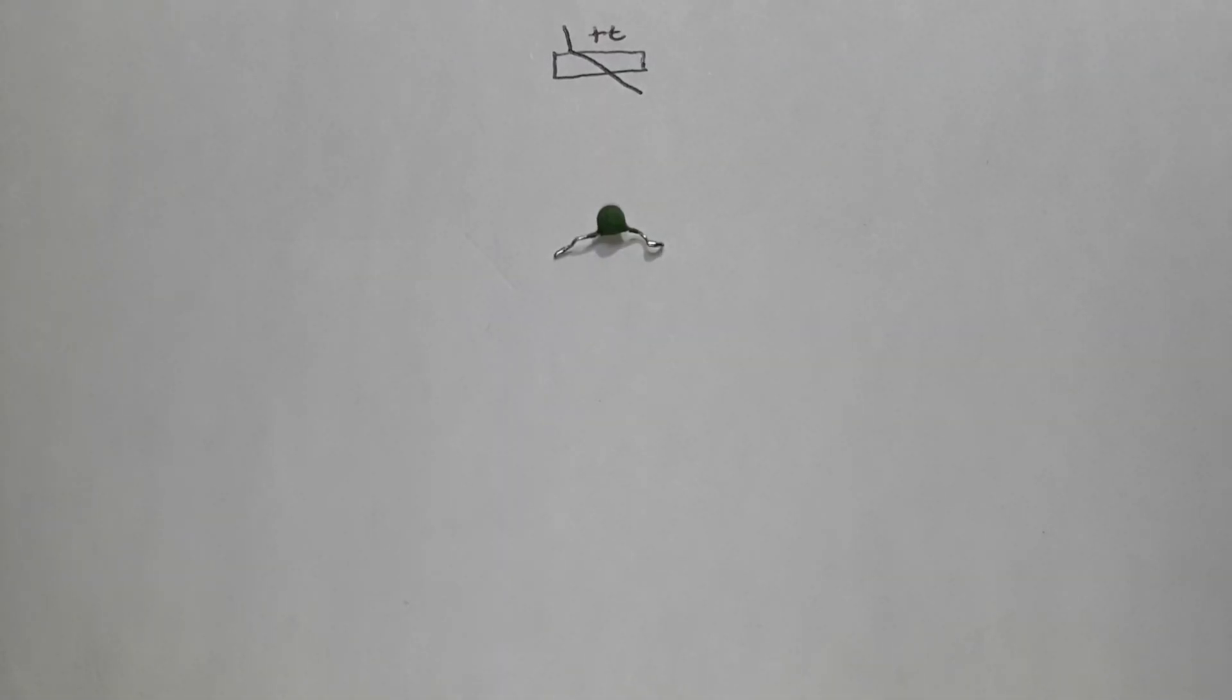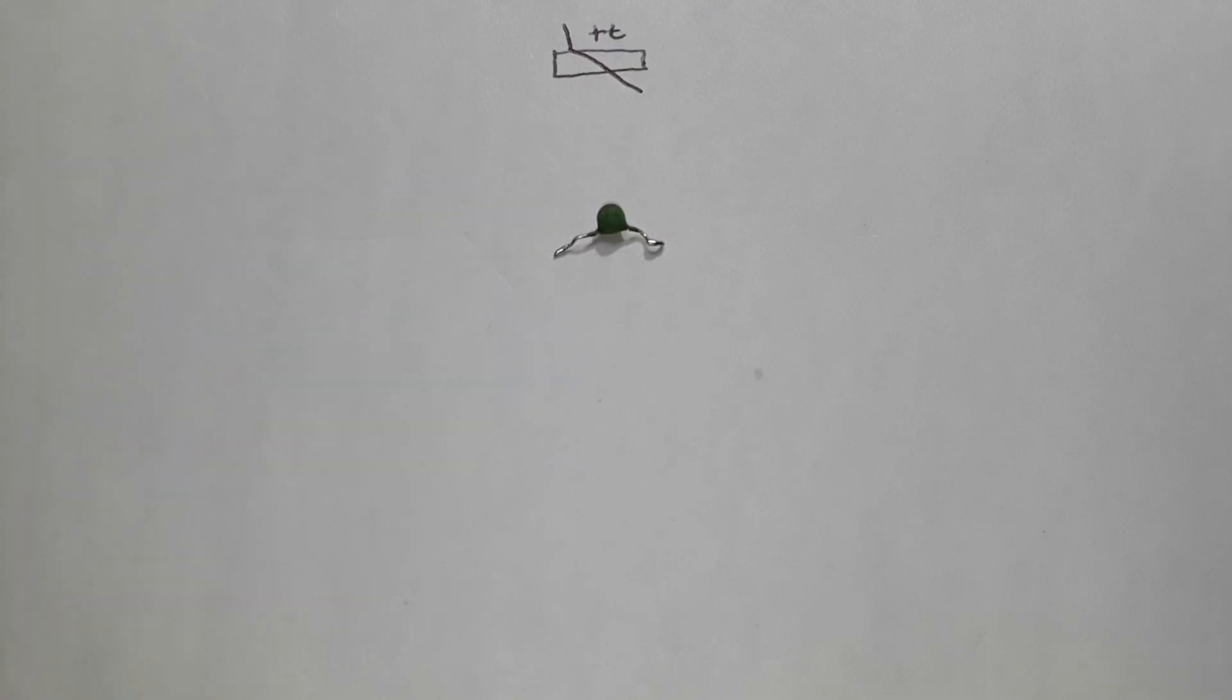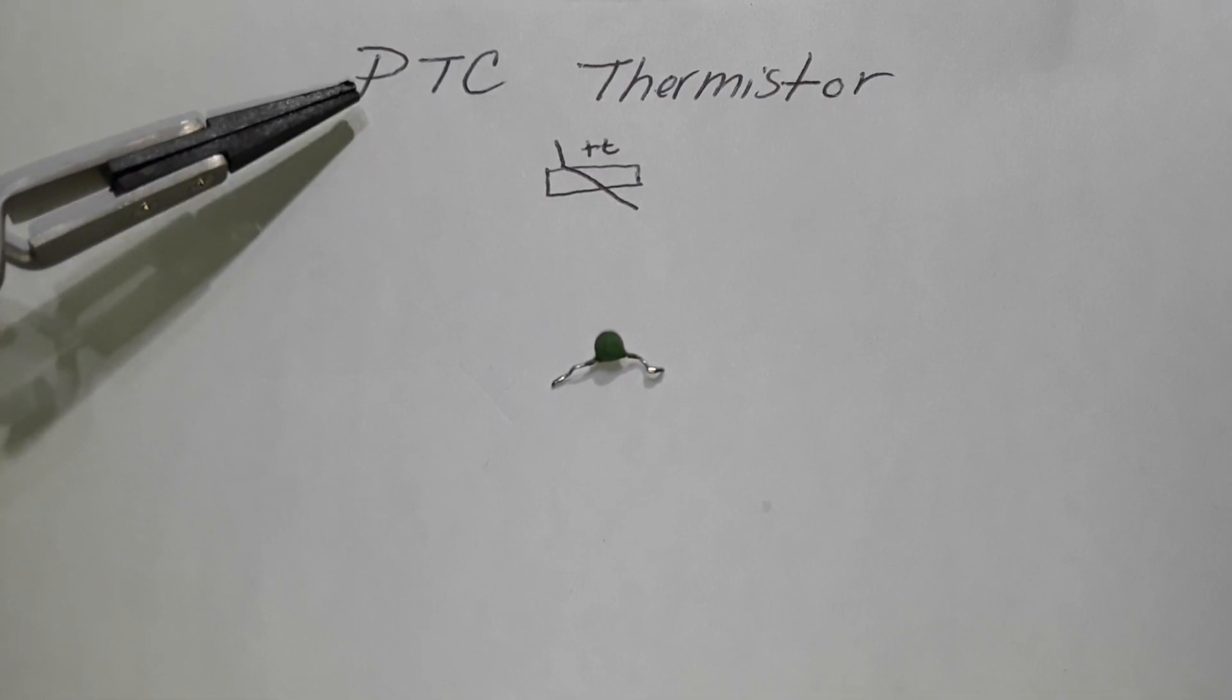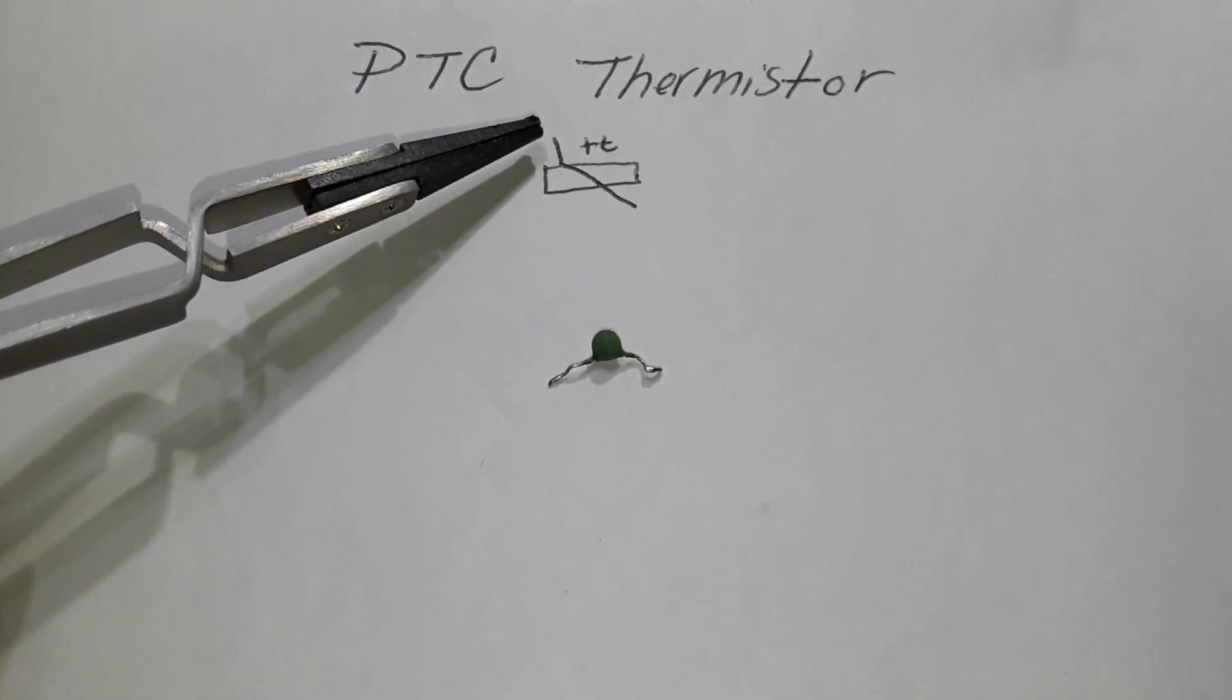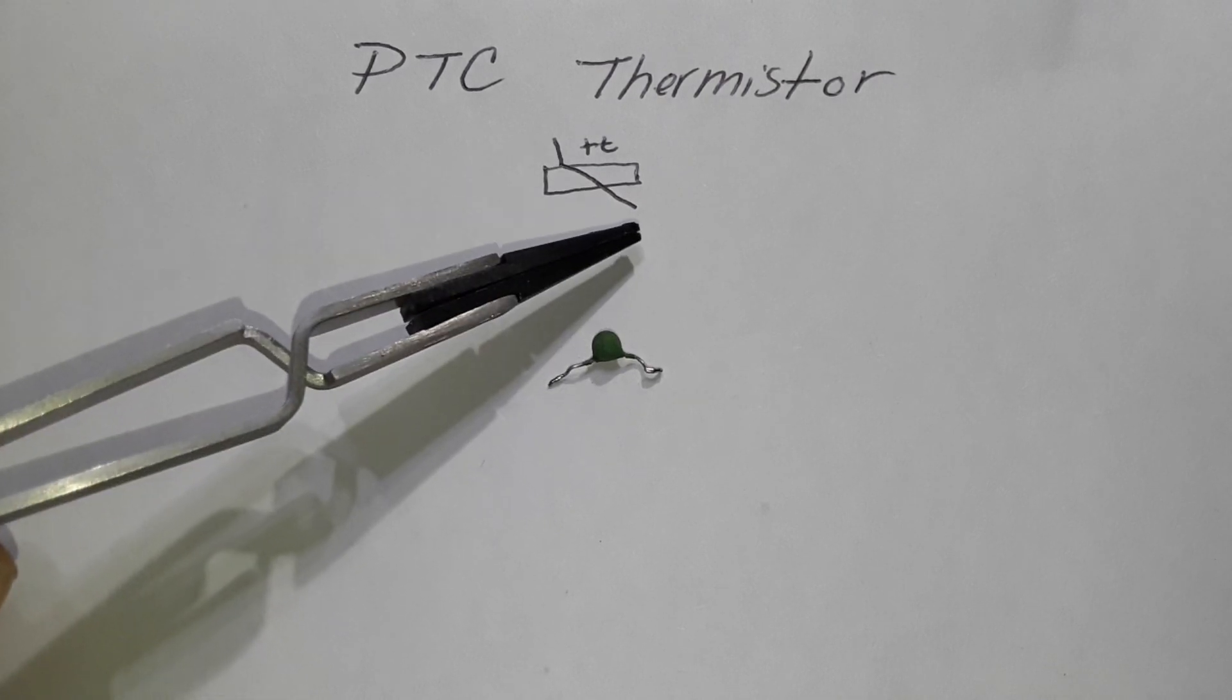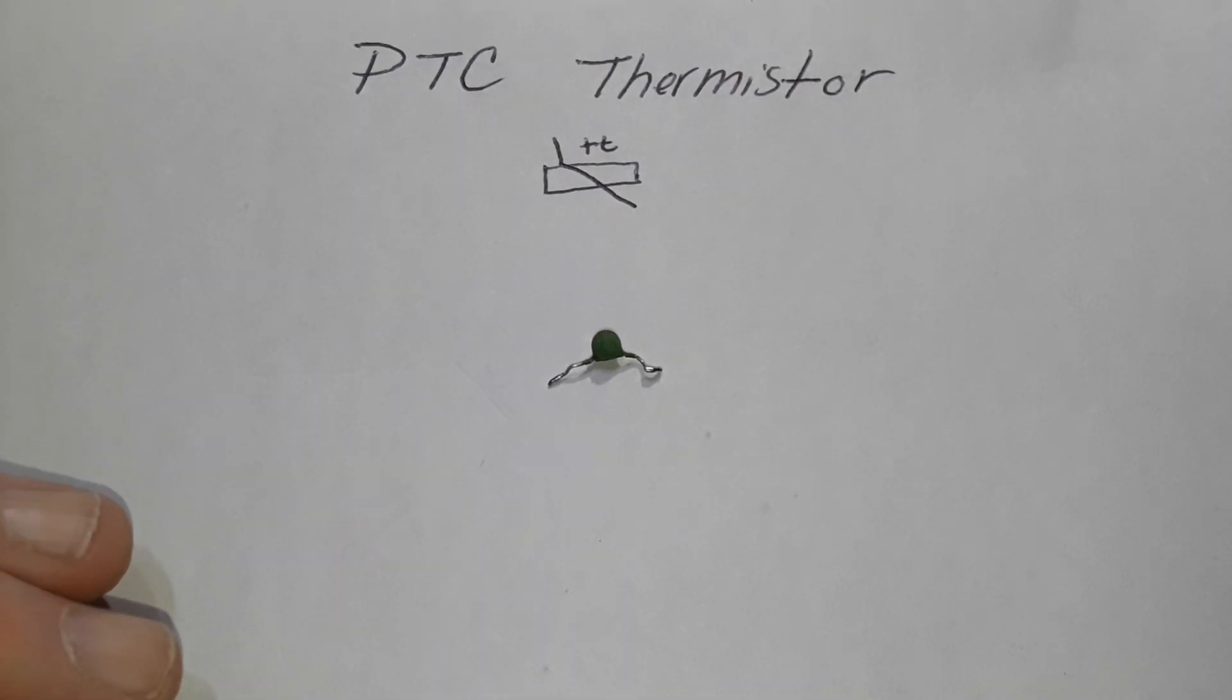Hey, what's happening guys? Today we are going to talk about this little device right here. And what it is, is a PTC thermistor. That is positive temperature coefficient. And if you look down here at the symbol you have our basic resistor box with a vertical line to the top of the box and then a diagonal line through it. And it is marked plus T for positive temperature coefficient.